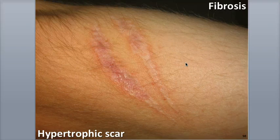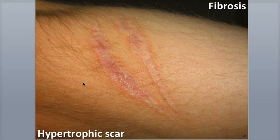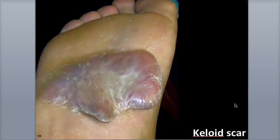A raised scar can form when significant amounts of scar tissue develop as a result of the wound. This is called a hypertrophic scar if it stays within the confines of the original wound. A keloid scar extends beyond the wound and protrudes into normal tissues.